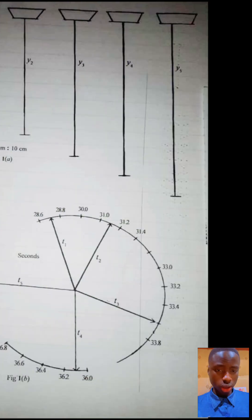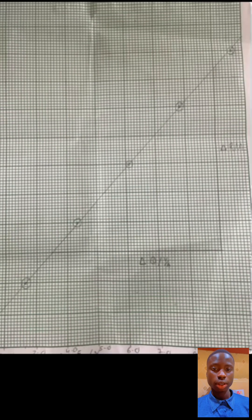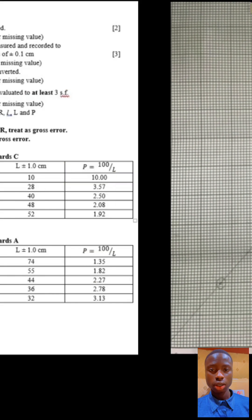Then you construct a table of results and organize your recorded values into a data form. Then you plot a graph using the data from your table of results. After that, you determine your slope by calculating it from the graph. Then you state your proportion. Let's dive into the practicals and go through each step.